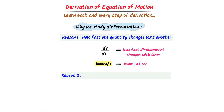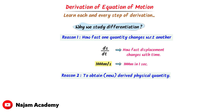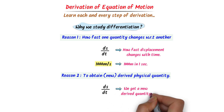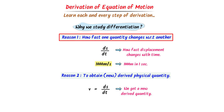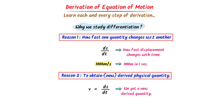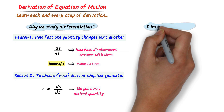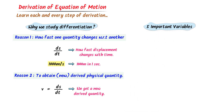Secondly, we need to study differentiation to obtain a new derived physical quantity. For example, when we write ds/dt — differentiating displacement with respect to time — we get a new derived physical quantity which we call velocity. So remember: differentiation helps us check how fast one physical quantity changes with respect to another, and it allows us to obtain new derived physical quantities. Now you must remember these five variables used in all three equations of motion.